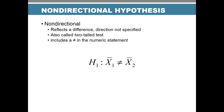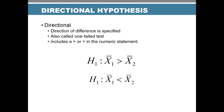A directional hypothesis specifies the direction of the difference — we're saying group one will be greater than, or group one will be less than, group two. This is called a one-tail test because we're only looking for an effect in one tail of the distribution, either the positive side or the negative side. We use a greater-than or less-than sign in this statement.